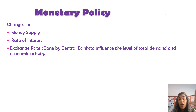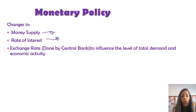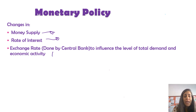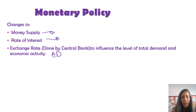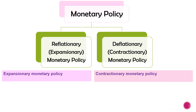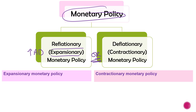When using a monetary policy, the government touches on three things: they will either be changing the money supply in an economy, the interest rate, or the exchange rate. This is done by the central bank in order to influence the level of aggregate demand and economic activity. The government could use an expansionary or reflationary monetary policy to increase aggregate demand, or a deflationary or contractionary monetary policy to decrease aggregate demand.